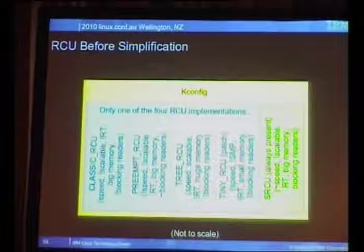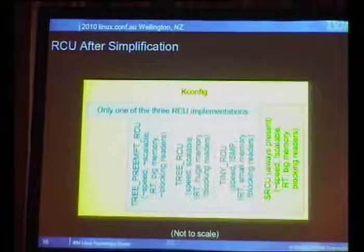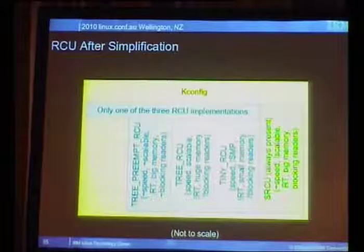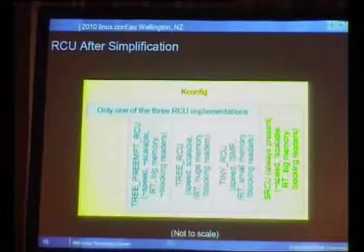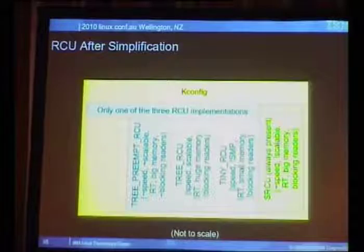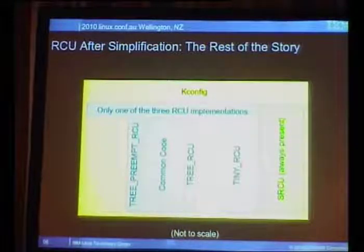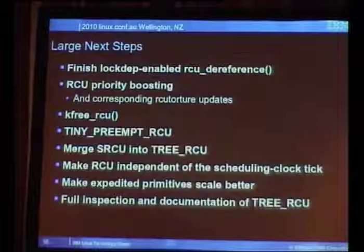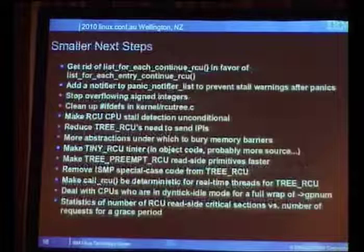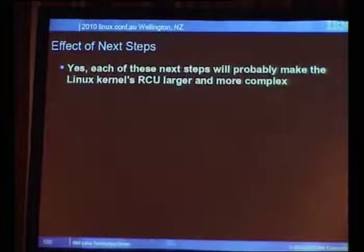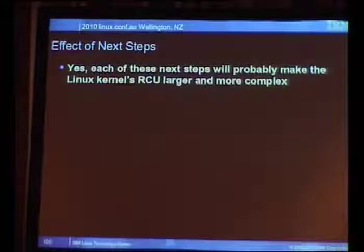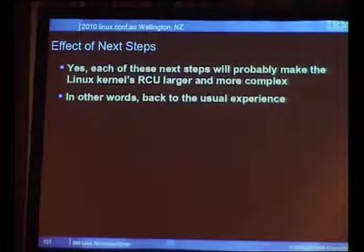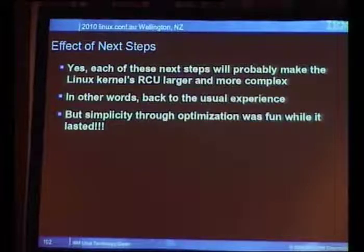We started with multiple RCU implementations in the kernel. By getting rid of them and unifying under TreeRCU and TreePreemptRCU as one piece of code with different plug-ins, the structure is now a lot cleaner. TreeRCU and TreePreemptRCU share common code, so the reality is much simpler than it used to be. There's always more cleanup needed, but there are also next steps: more people asking for things in RCU. I'm afraid that these will make the implementation larger and more complex — I got lucky once in 15 years, so the odds may not be good. But this was a lot of fun while it lasted.